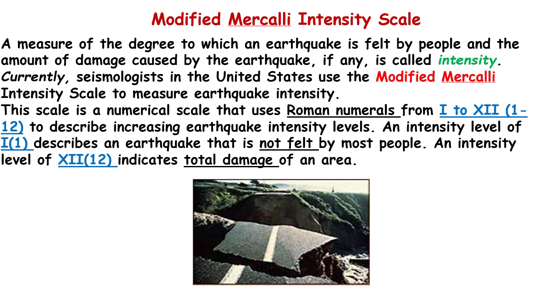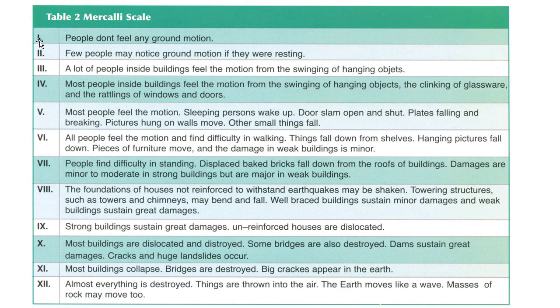An intensity level of 1 describes an earthquake that is not felt by most people — most people cannot tell that an earthquake has occurred. An intensity level of 12 indicates total damage of an area. So the lowest level of the Mercalli scale is 1 and the highest is 12. There are 12 levels in the Mercalli scale. At level 1, people do not see any ground motion.